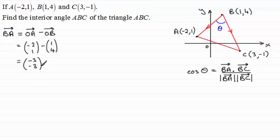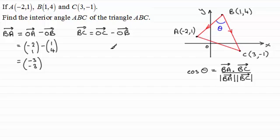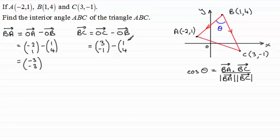Doing much the same to get the vector BC: the vector BC is the position vector of C minus the position vector of B, which is (3, -1) minus (1, 4). Working this out, we end up with (2, -5).